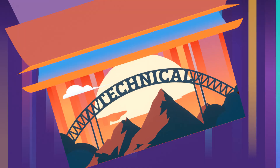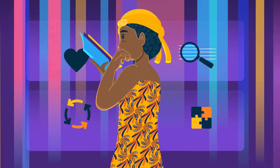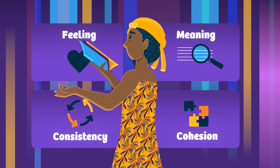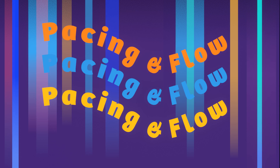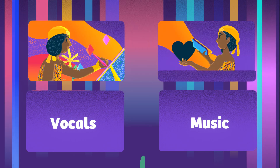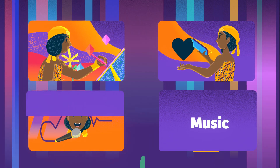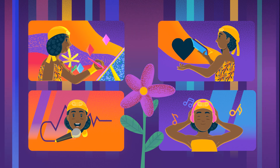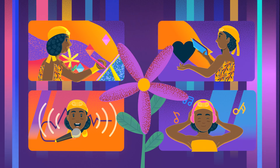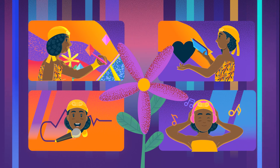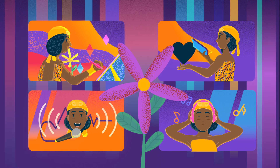The message is about the plot, the feeling, the meaning, consistency and cohesion, pacing and flow. It's about the overarching design, the narrative, the vocals and the music that makes up the piece. Motion graphic design doesn't exist in a void, and the best motion graphics intertwine all of these elements to tell an effective story.